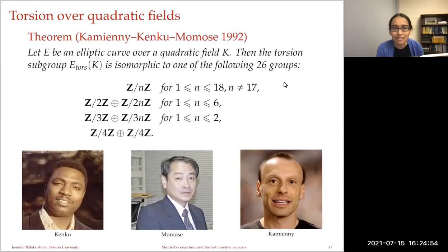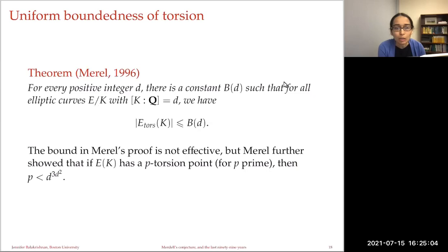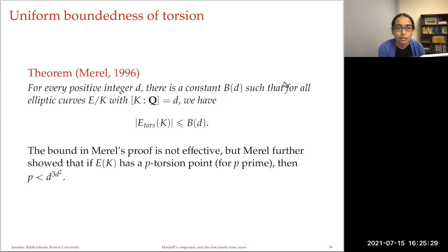This is remarkable: a complete understanding of torsion over all quadratic fields with just 26 possibilities. One can ask whether there is some sense of uniformity for torsion over number fields. Merel proved in 1996 that for every positive integer d there is a constant B(d) such that for all elliptic curves E over k a number field of degree d, the order of the k-rational torsion is bounded by B(d). This bound is not effective, but Merel showed that if E(k) has a p-torsion point for prime p, then p is bounded by d^(3d²), with further refinements by Pappas.